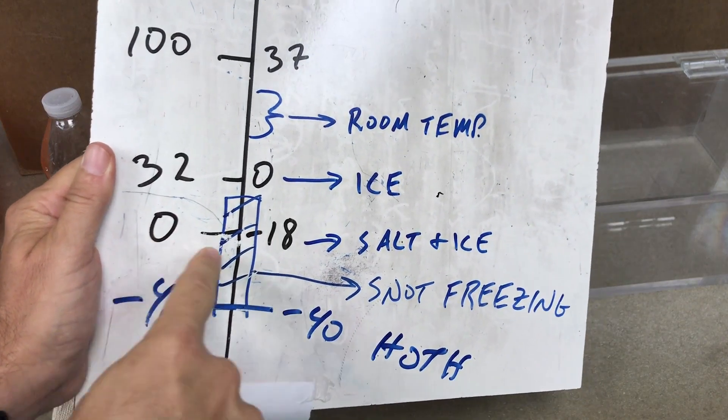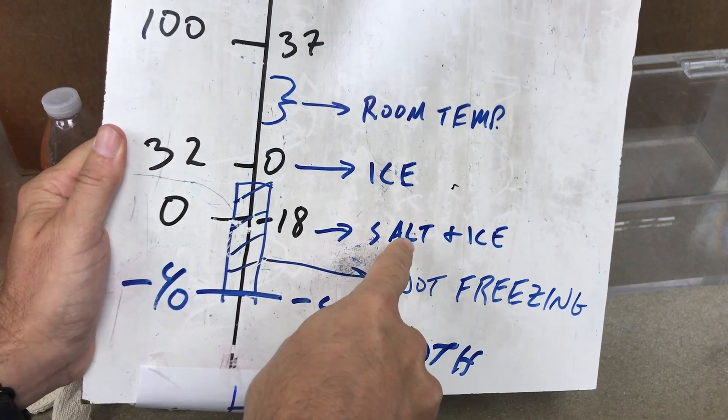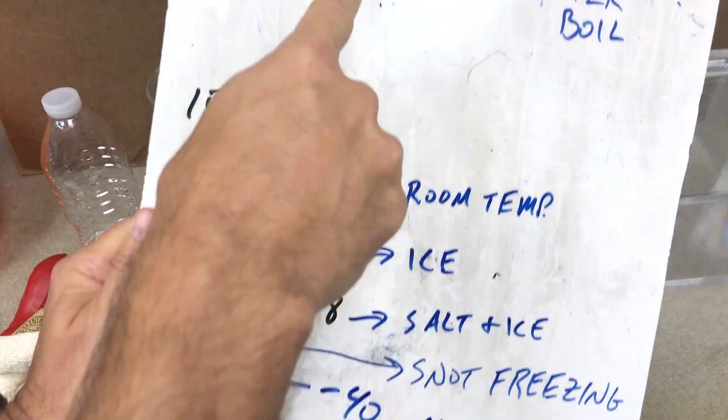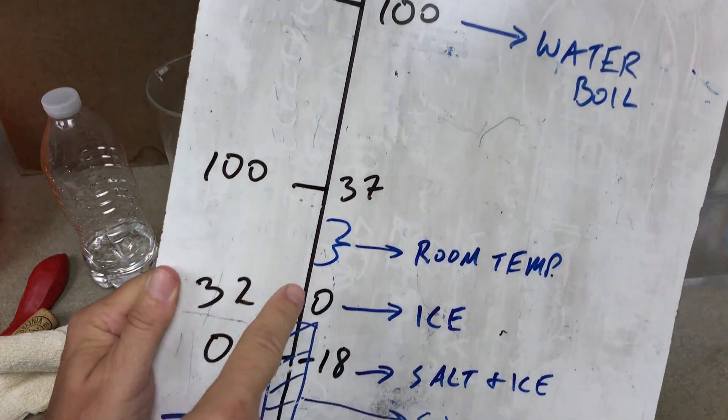Zero Fahrenheit is the coldest you can get a mixture of salt and ice. So that's kind of cool. If you go down lower, and this is a scale correctly scaled. I measured it.